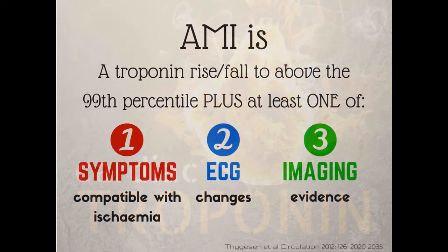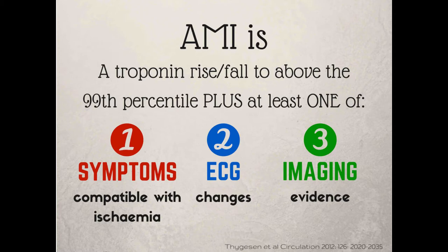Cardiac troponin is a fantastic biomarker, as I'm sure you well know. The third universal definition of myocardial infarction acknowledges how important this biomarker is for diagnosing acute myocardial infarction. This slide summarises the third universal definition of acute myocardial infarction. The one essential criterion you have to hit to fulfil that diagnosis is to have a rise or fall of cardiac troponin.